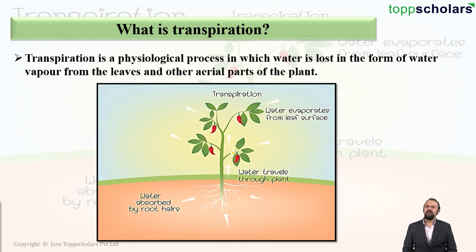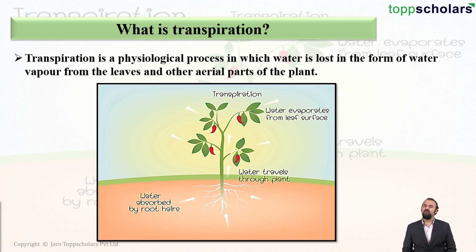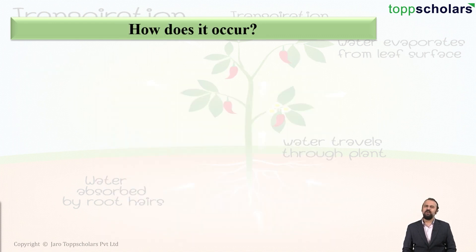Transpiration is a physiological process in which water is lost in the form of water vapor from the leaves and other aerial parts of the plant.